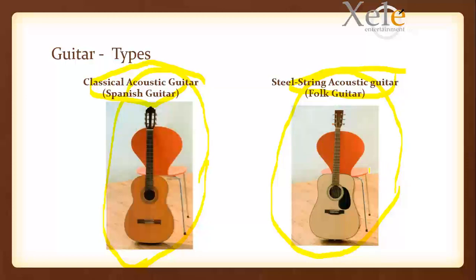But the most obvious difference: if you look at the headstock of both of them, you see this one is totally closed and this one is open. So for the classical guitar, it is open, but if you look at the headstock of the steel string guitar, you see that it is totally closed.